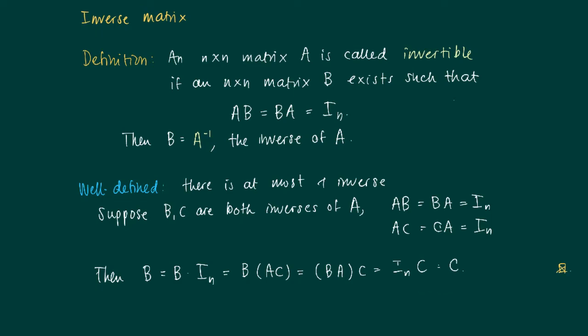Then we have that B should equal C. So actually there is at most one inverse of a matrix A. This means that the definition is good.